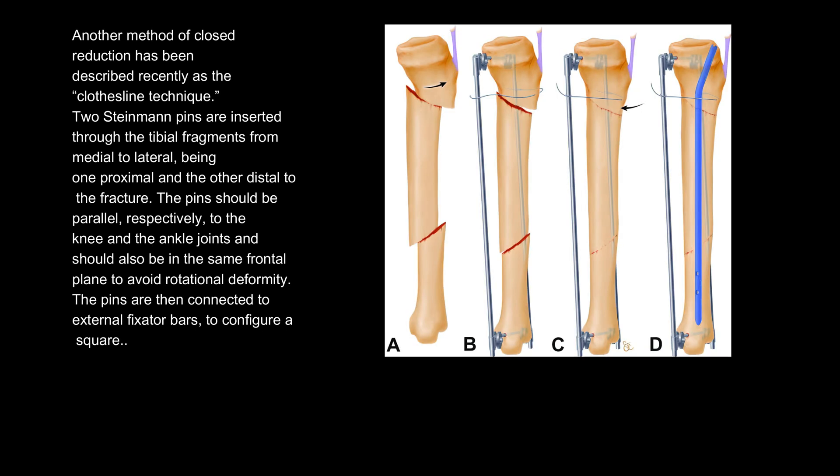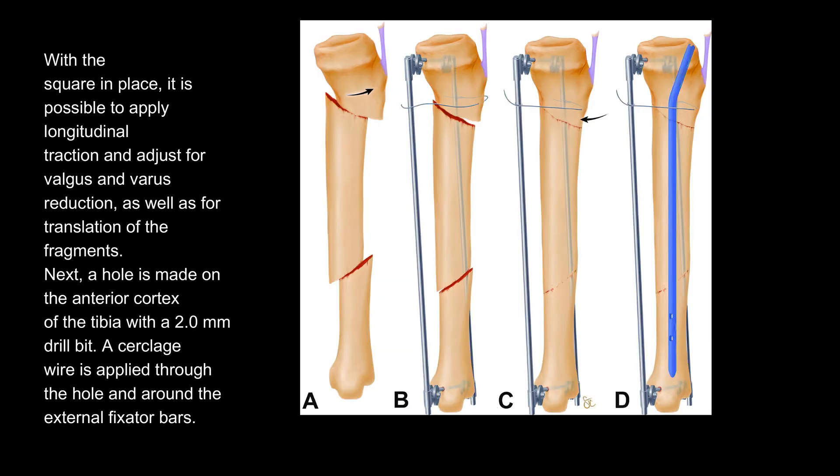Another method of closed reduction has been described recently as the clothesline technique. Two Steinmann pins are inserted through the tibial fragments from medial to lateral, one proximal and the other distal to the fracture. The pins should be parallel, respectively, to the knee and the ankle joints, and should also be in the same frontal plane to avoid rotational deformity. The pins are then connected to external fixator bars to configure a square. With the square in place, it is possible to apply longitudinal traction and adjust for valgus and varus reduction, as well as for translation of the fragments. Next, a hole is made on the anterior cortex of the tibia with a 2.0 mm drill bit, and a cerclage wire is applied through the hole and around the external fixator bars.